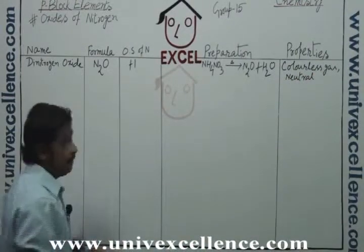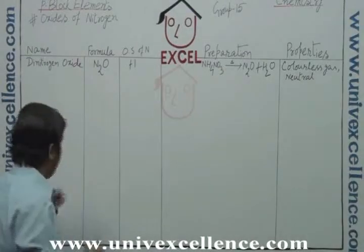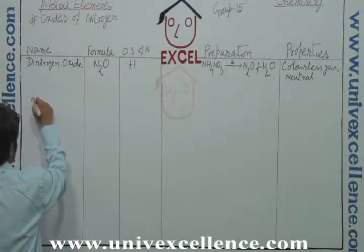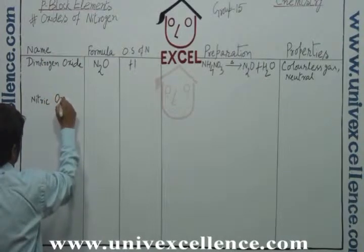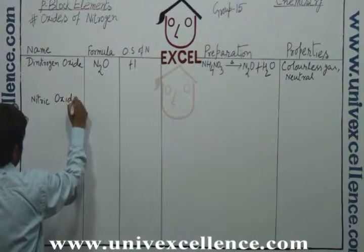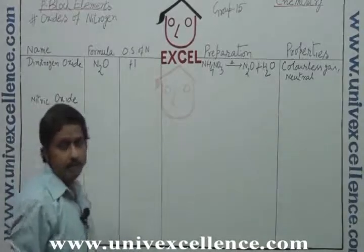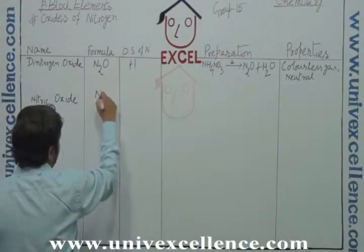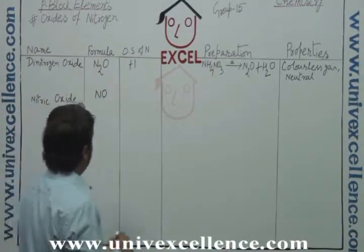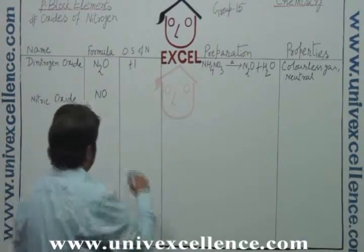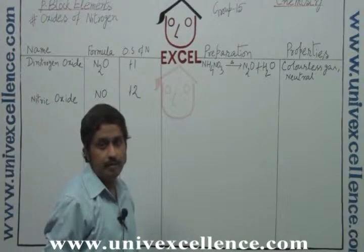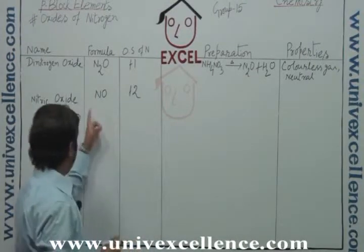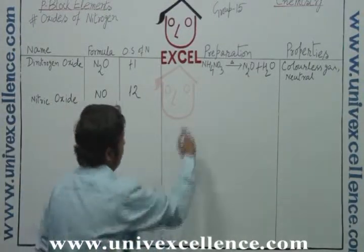The second one is nitric oxide. The formula is NO. In that case, the nitrogen exhibits the oxidation number plus two.